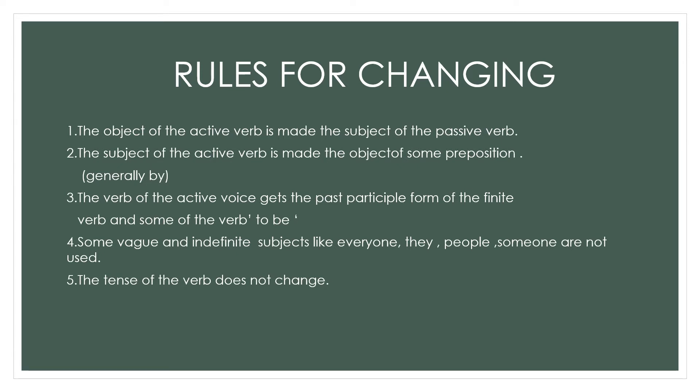Let us look again at some rules for changing sentences from active to passive voice. First, the object of the active voice is made the subject of the passive verb. Then, the subject of the active verb is made the object of some preposition — generally the preposition 'by' is used, though sometimes there may be some other preposition as well. The verb of the active voice gets the past participle form of the finite verb and some form of the verb 'to be'.